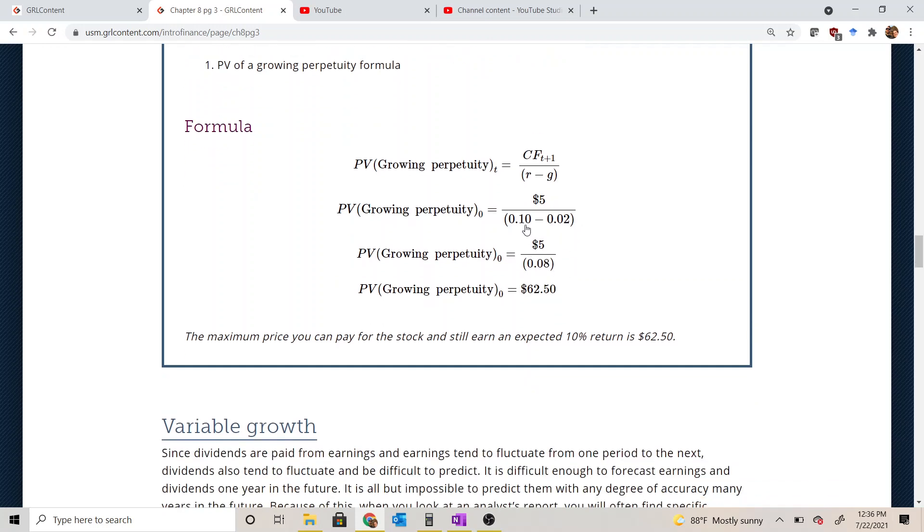Alright, so order of operations matters here. This guy, the denominator is in parentheses, so we want to go ahead and do that subtraction first before we do the division. And once we do 0.1 minus 0.02 to get 0.08, then we can divide 5 by 0.08, which comes out to $62.50.